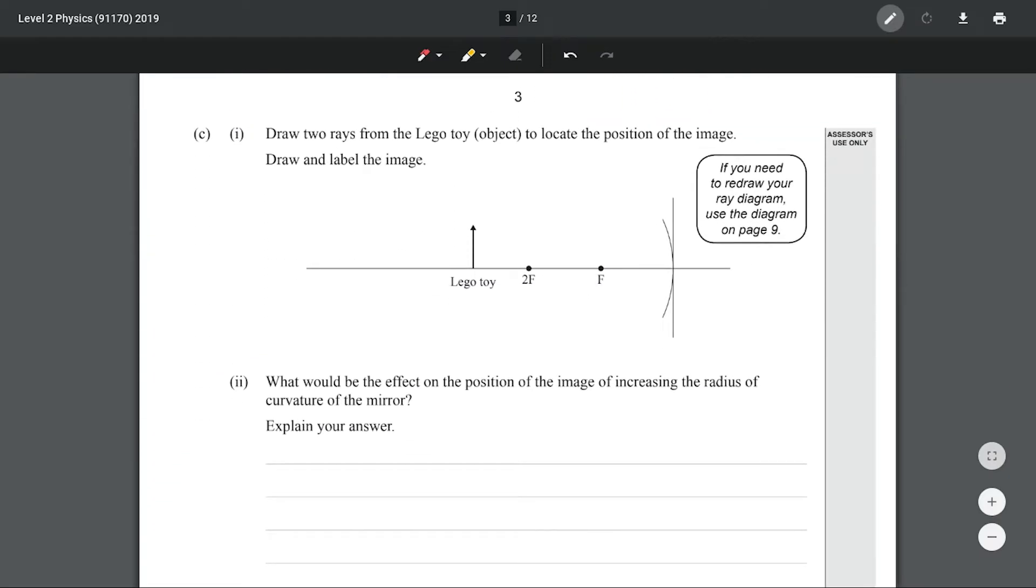Draw two rays from the Lego toy to locate the position of the image and label the image. There are three rays we can draw. The first is parallel to the axis and then through the focal length. The second is through the focal length and parallel to the axis. The third is reflected symmetrically through the mirror. Our image is therefore right here, and don't forget to label that image.